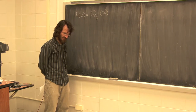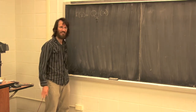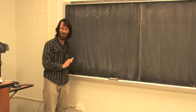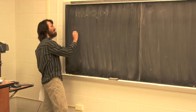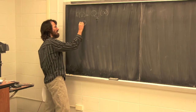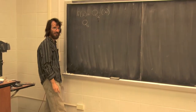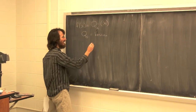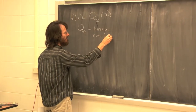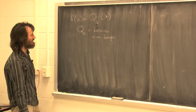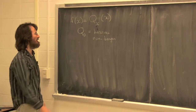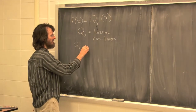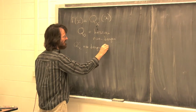It's like saying any function looks like a quadratic function at each point. And then we said that q sub zero — the quadratic form at zero — was equal to the Hessian, and that's non-degenerate. Because that's non-degenerate, q sub x is going to be non-degenerate for x close to zero.